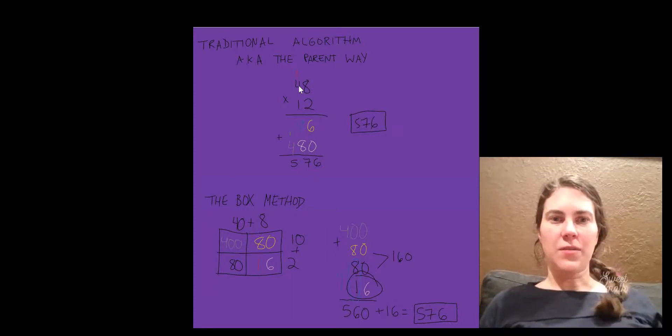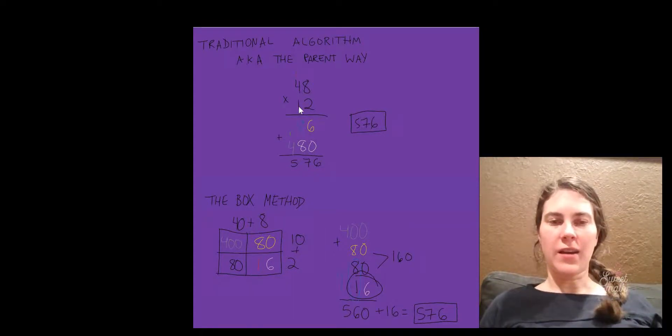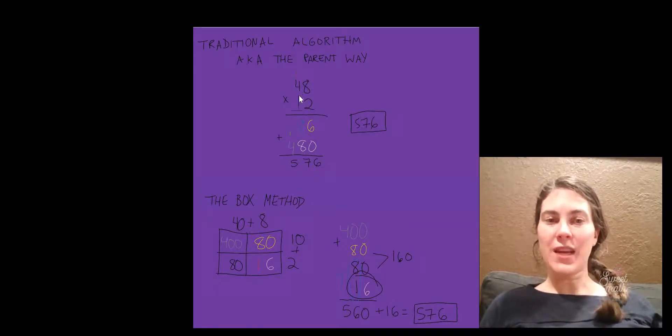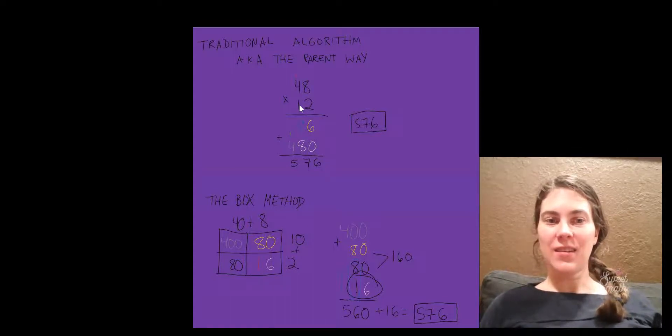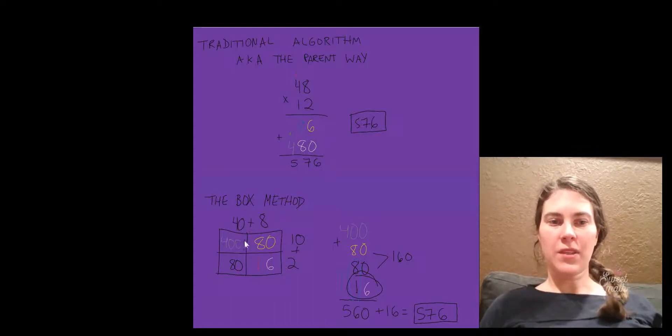Now we do 4 times 1, which is really 40 times 10. 40 times 10, which is 400.